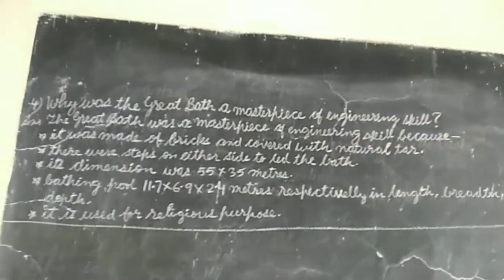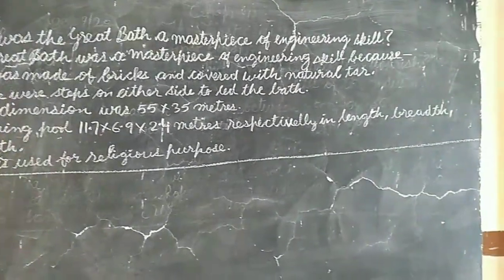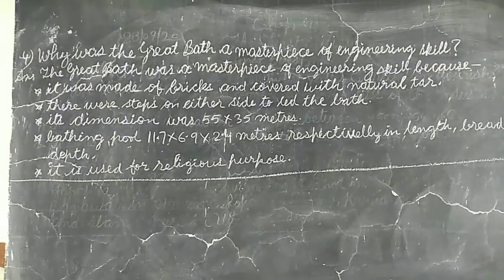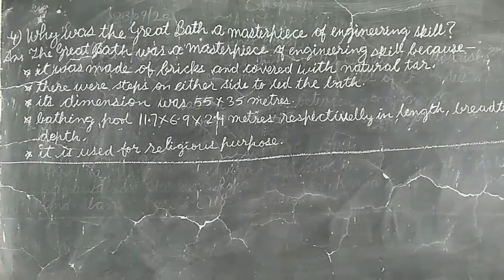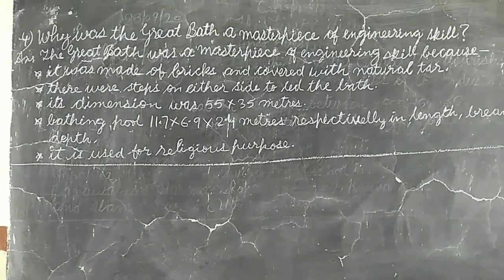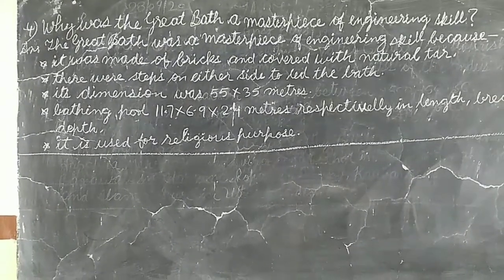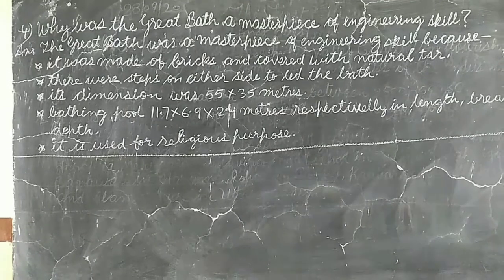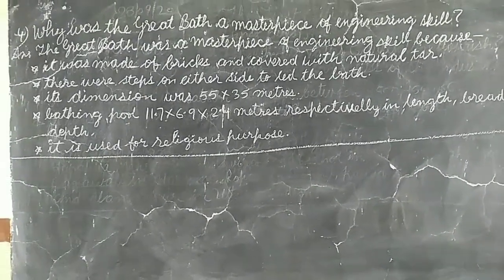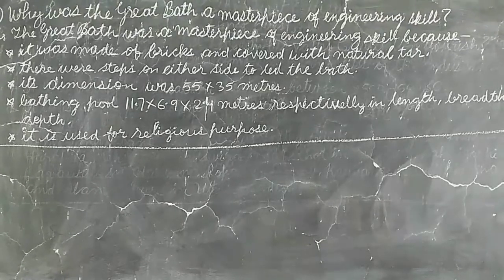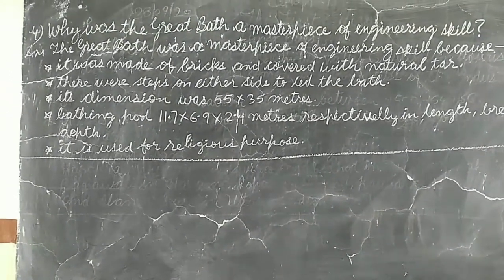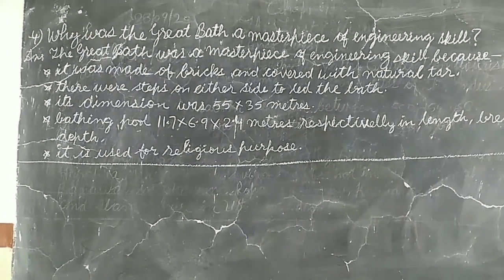Question number four: why was the Great Bath a masterpiece of engineering skill? The Great Bath was a masterpiece because it was made of bricks and covered with natural tar. There were steps on either side. Its dimensions were 55 by 35 meters overall, with the bathing pool measuring 11.7 by 6.9 by 2.4 meters in length, breadth, and depth respectively. It was used for religious purposes.